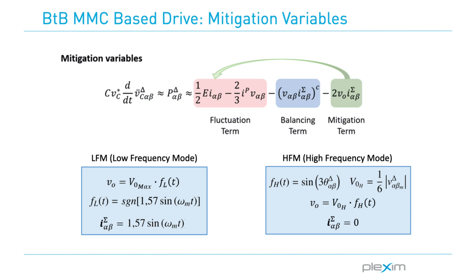During the low frequency mode operation, the mitigation variables are used to maintain the capacitor voltage fluctuations to an acceptable range. Then, when the high frequency mode is enabled, the mitigation variables are omitted.